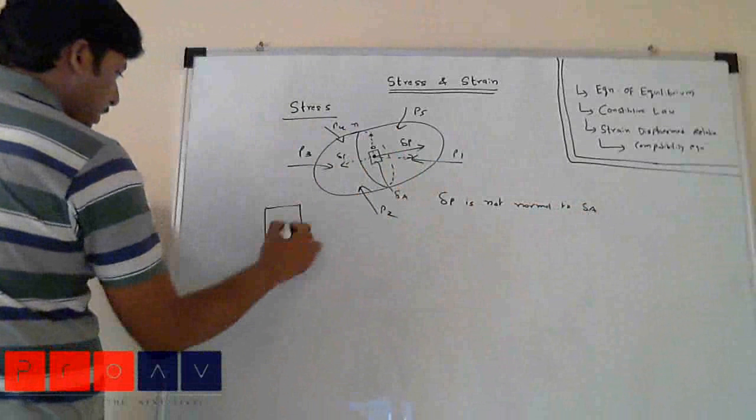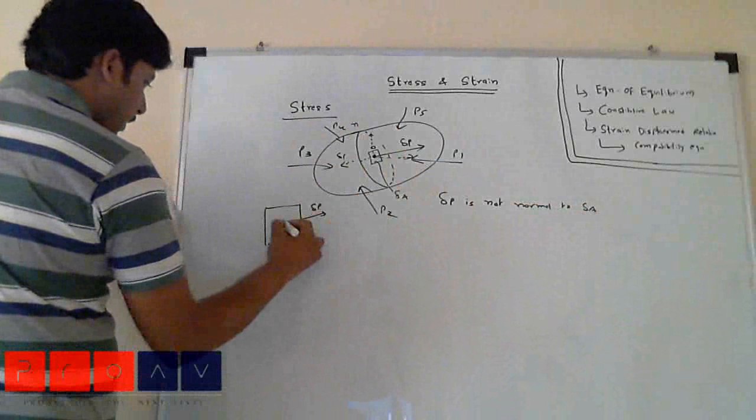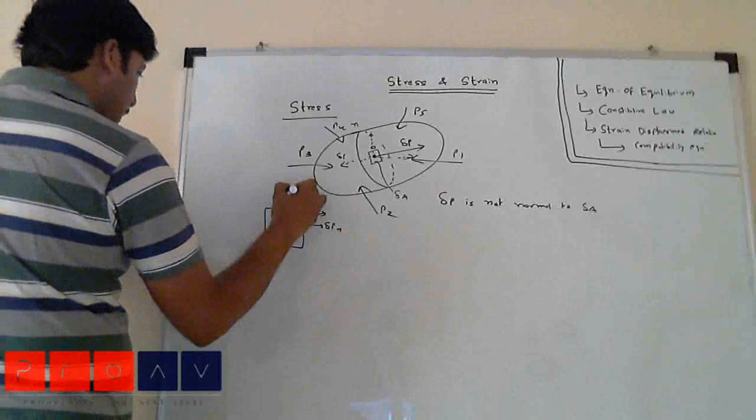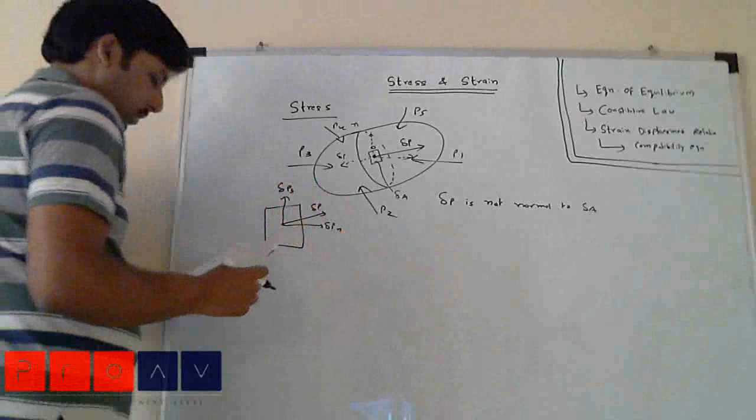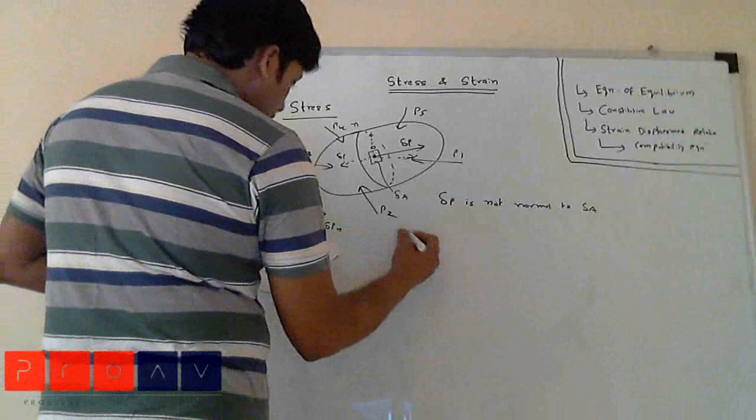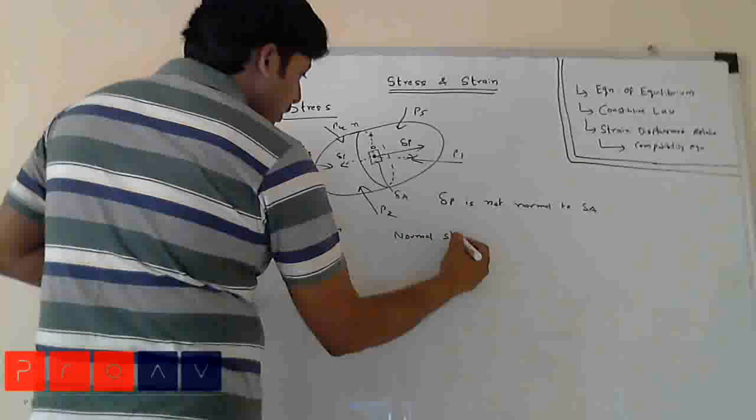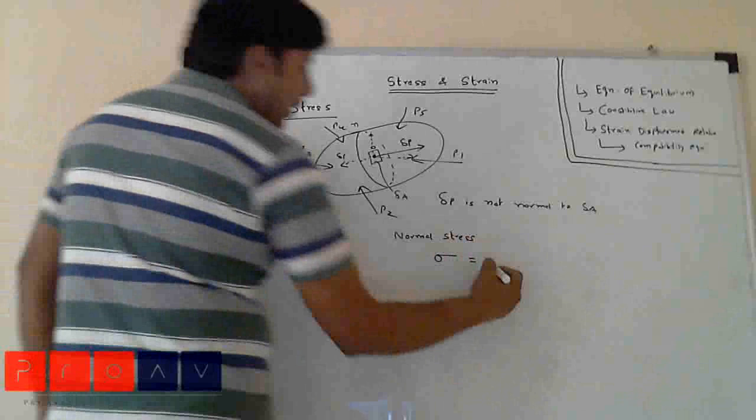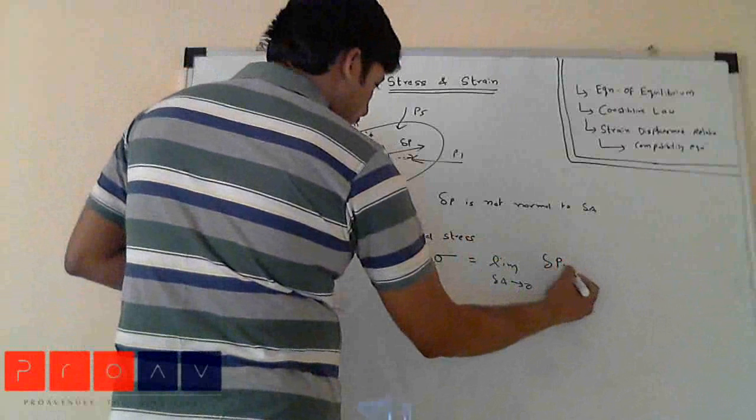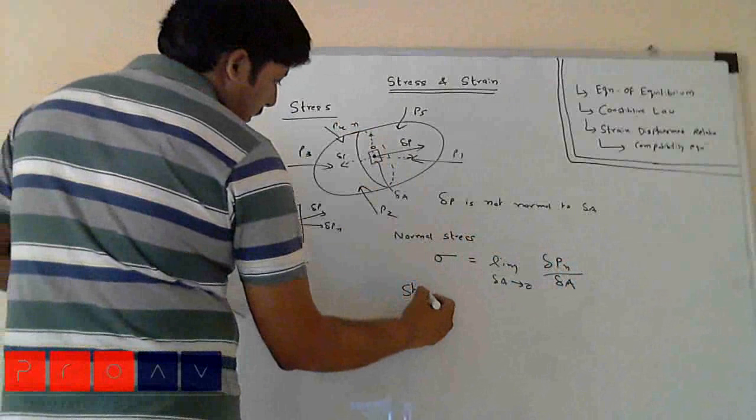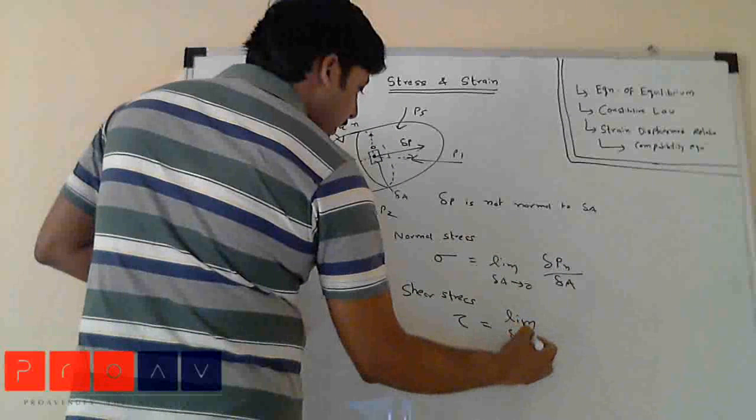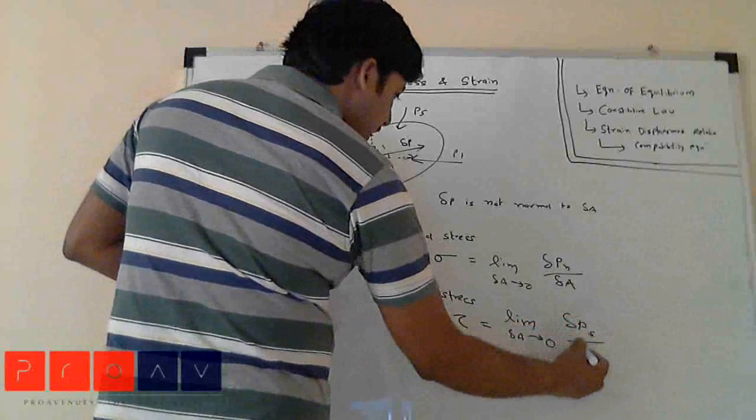This is the delta P, with delta P normal and delta P shear. The normal stress is given as the limit as delta A approaches zero of delta Pn by delta A. And shear stress is given by the limit as delta A tends to zero of delta Ps by delta A.